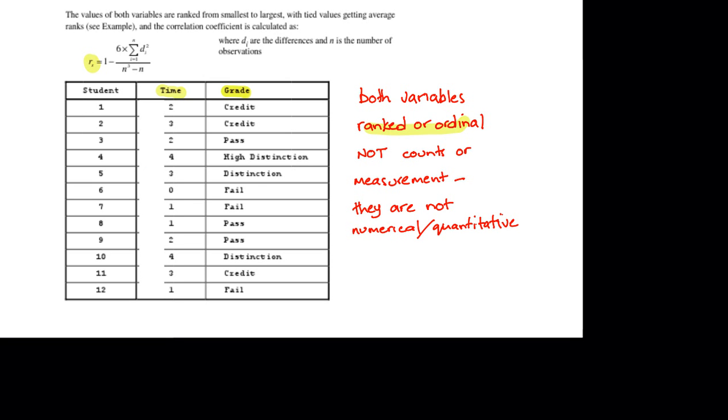The first step in calculating this is to give ranks to each of the observations in increasing order, and this is for both variables. I've started doing this here for time. I've started with the smallest observation, the shortest time, given that a rank of 1.